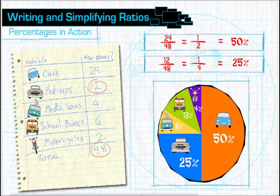As you can see, a pie chart or circle graph is a great tool to help you visualize ratios in percent form. This chart allows us to see the ratio of different types of vehicles to the total number of vehicles Taylor counted.